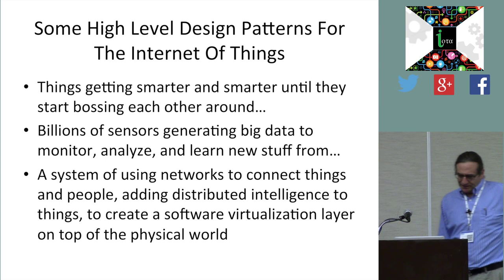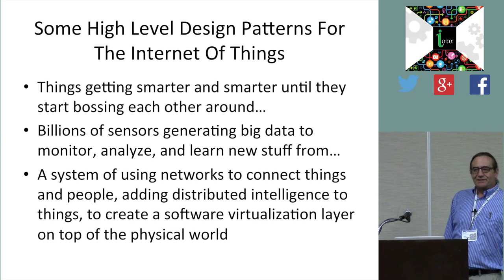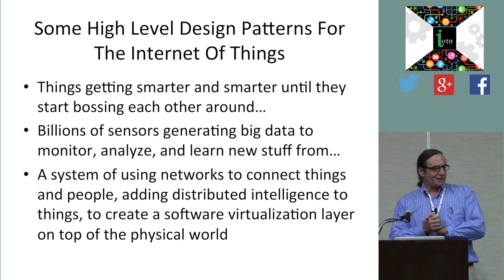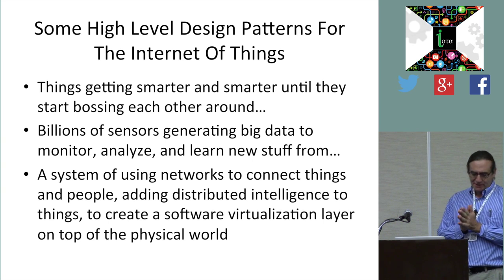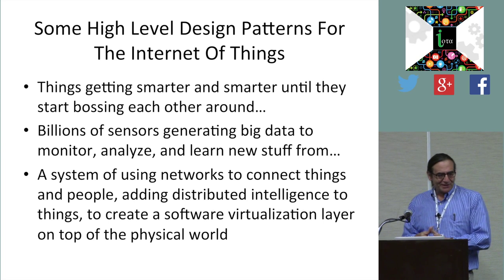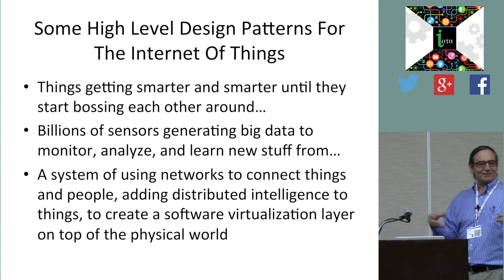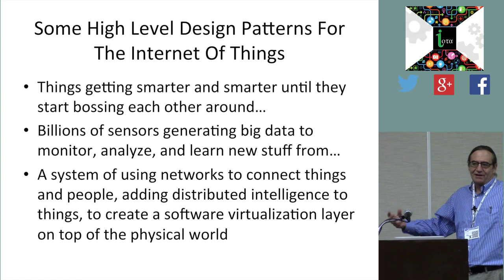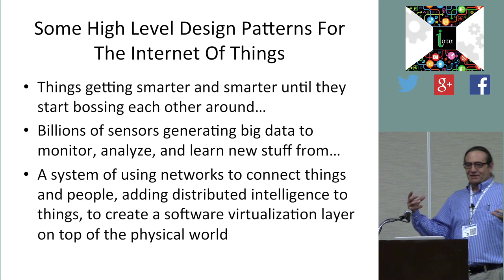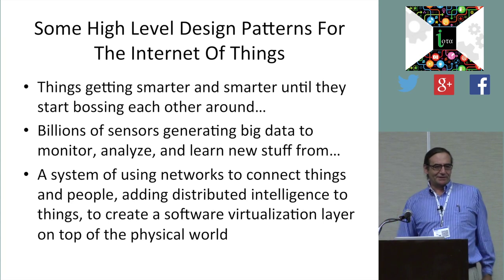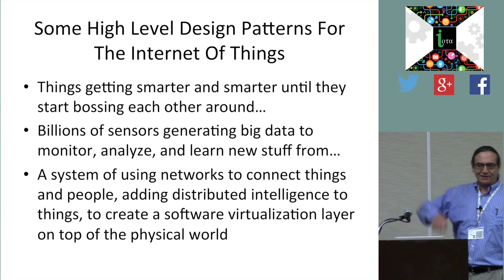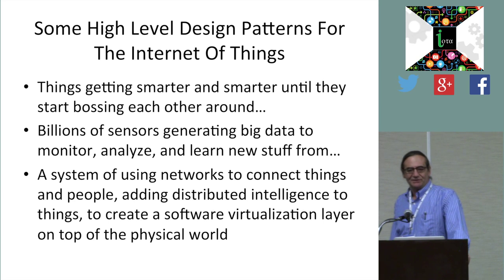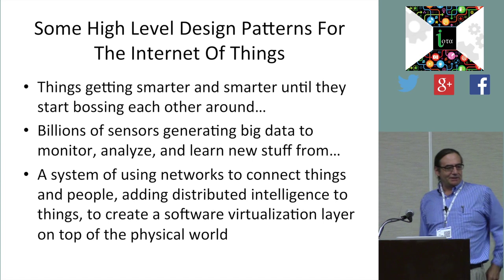So we're going to look at the high-level design patterns. As the Internet of Things was being figured out, there were a few different ways people see it. The first is a little tongue-in-cheek: things get smarter and smarter until they can start bossing each other around. In other words, Moore's Law is creating richer and richer embedded software - things get smart enough so that an application can actually run on one of the things, like thermostats and light bulbs finding their own light switches.